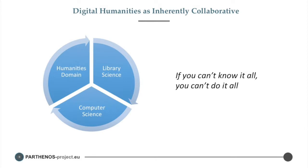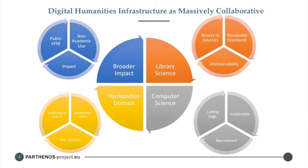If we look at digital humanities as inherently collaborative — because when you bring together humanities knowledge at a high level, library science knowledge of how you work with collections at a high level, and computer science also at a high level — no individual, or very few individuals, can understand it all. And if you can't know it all, you can't do it all, so you have to work together. Once we get to an infrastructure scale, all of these things get blown open to a major level. I would say that digital humanities research infrastructure development is not only collaborative, it's massively collaborative.